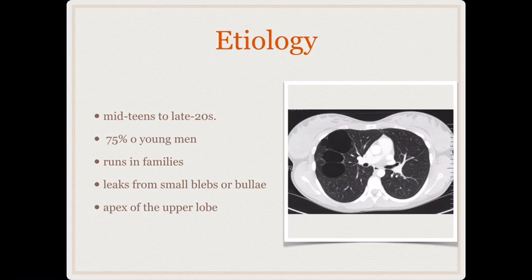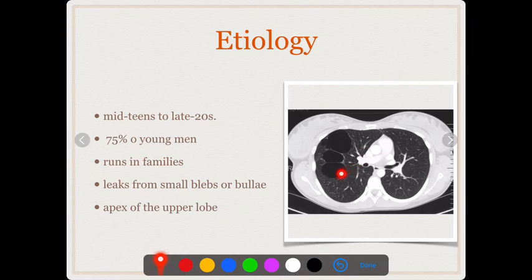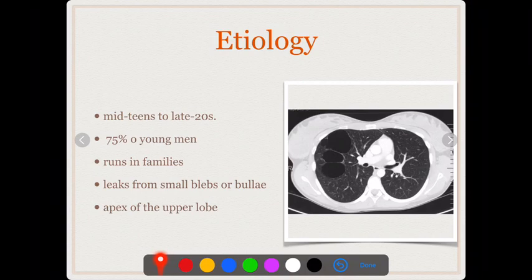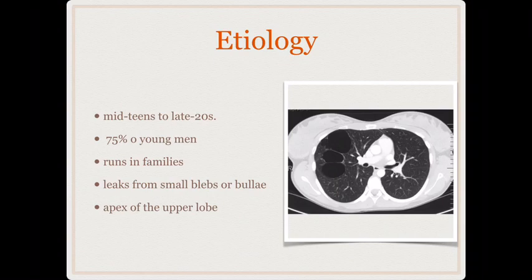The etiology is not known. This occurs in young individuals — 75% of them are men — and it runs in families. In some patients there is what is known as bullous disease of the lung: congenital bullae present in the lung that, when the patient exerts himself, can break and allow air to leak into the pleural cavity, producing primary spontaneous pneumothorax. However, in many patients no cause is found at all. The commonest site for bullae in this type of pneumothorax is the apex of the upper lobe — a common MCQ.